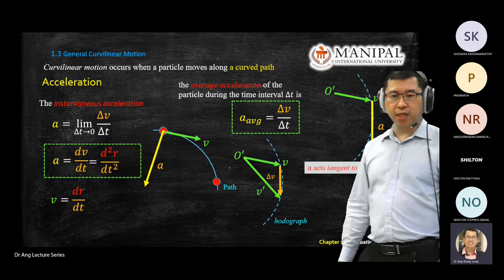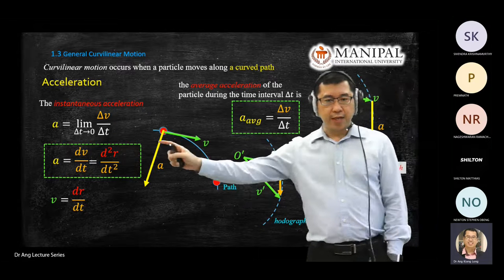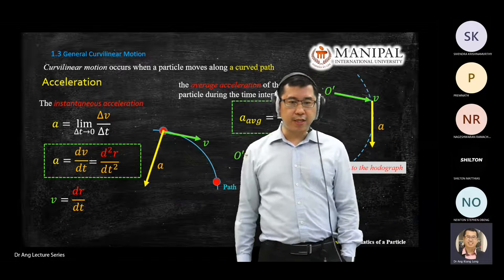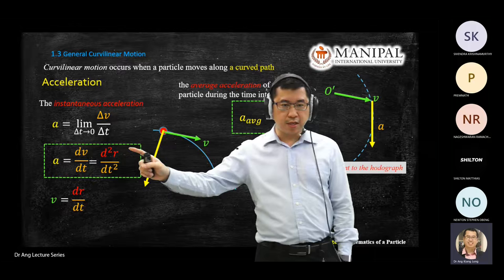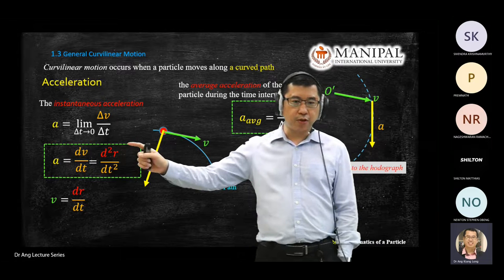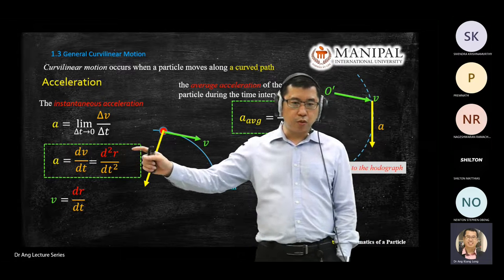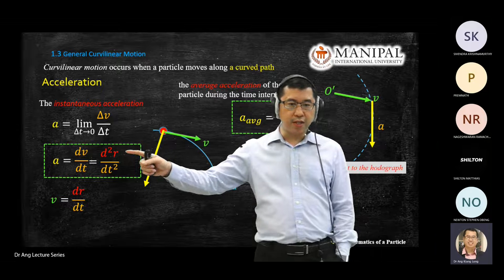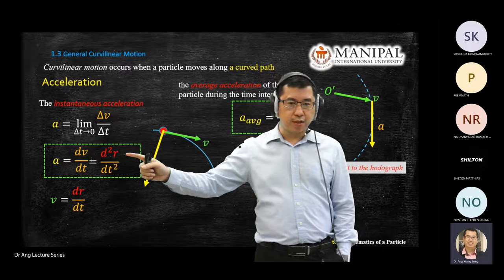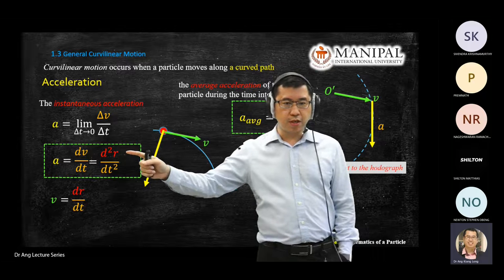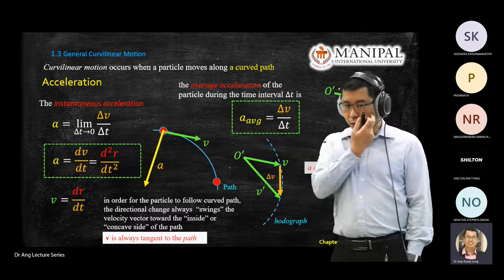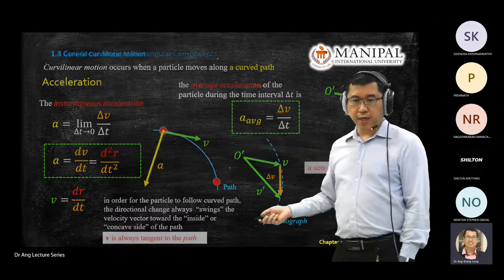Acceleration also has two calculations. One uses velocity; another uses the displacement parameter where you do a second derivation — double differentiation on the equation of your displacement. So this is what we covered yesterday.